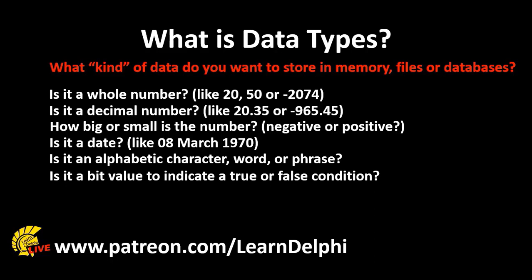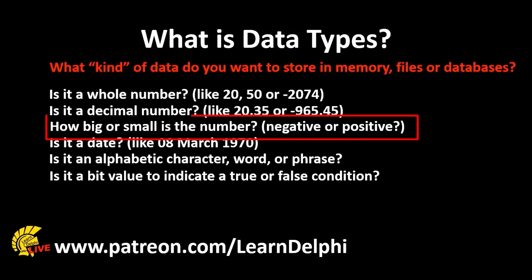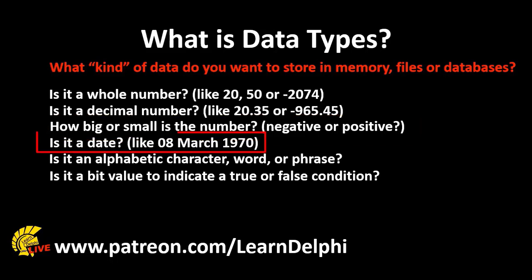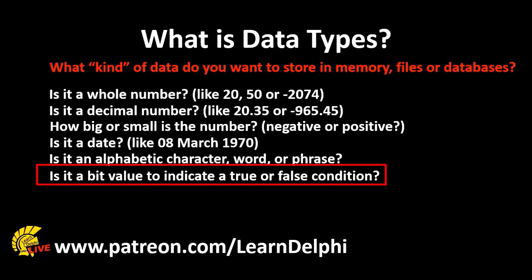To choose the correct data type, you must ask yourself the following questions. Is the value to be stored a number? And if it is, is it a whole number or is it a decimal number? How big or small will the number be — in other words, what is the range? It is also important to know if you must store negative numbers. Will the value be a date like a birthday? Or is it a character string — a letter, a word or a phrase? Or do you want to save a bit value or a boolean, like true or false?